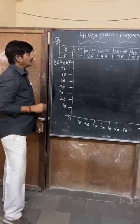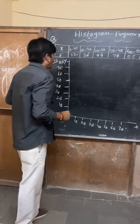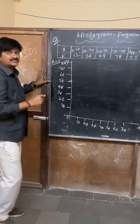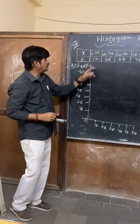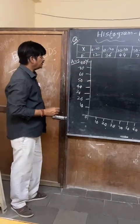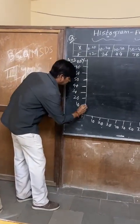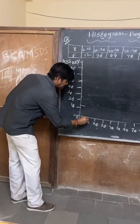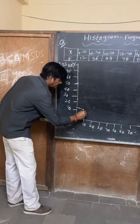Why? Because 78 is the highest value, so I need to take till 78. For 0 to 10, it is like 12 — mark it approximately like this on the graph. Take the values carefully like this.